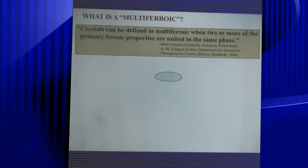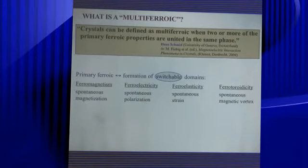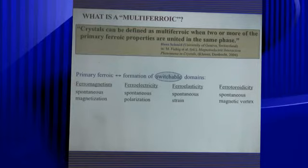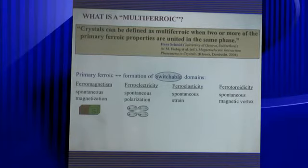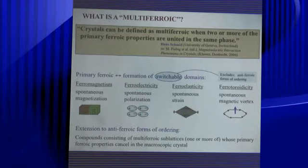What is a multiferroic material? By definition from Hans Schmitt, a crystal can be defined as multiferroic when two or more of the primary ferroic properties are united in the same phase. The primary ferroic properties are: ferromagnetism associated with spontaneous magnetization, ferroelectricity associated with spontaneous polarization, ferroelasticity associated with spontaneous strain, and ferrotoroidicity associated with spontaneous magnetic torque. This effect appears in different phases, excluding antiferroic ordering when it does not appear macroscopically.